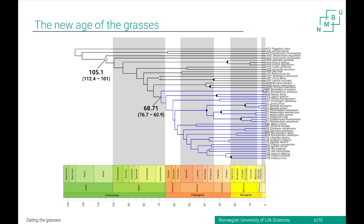When you remember the temperature curve from the beginning, the Eocene-Oligocene boundary, when the temperature dropped, was at that point. And that is the time when we could show all the major lineages of the temperate grasses had already diverged. The common ancestor of the Poidae subfamily originated at a time when the global climate was warm in general.